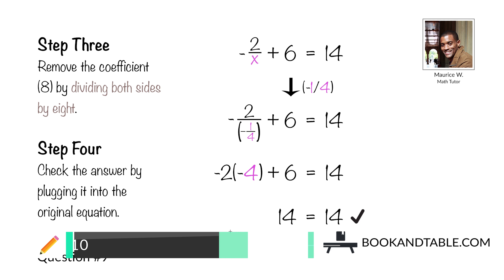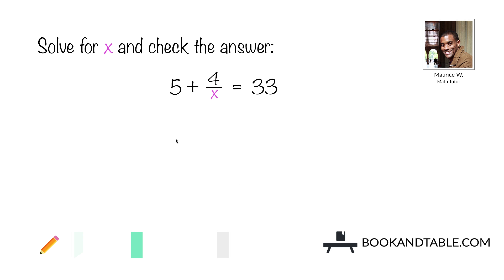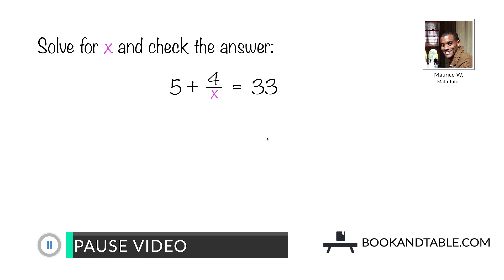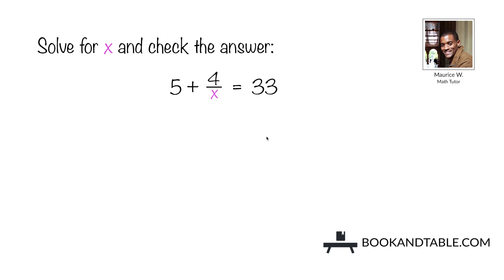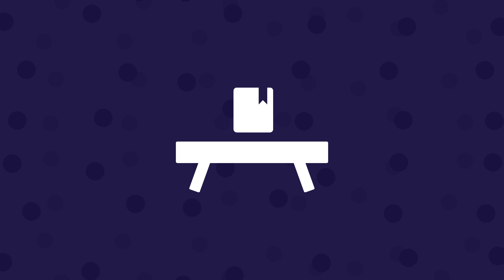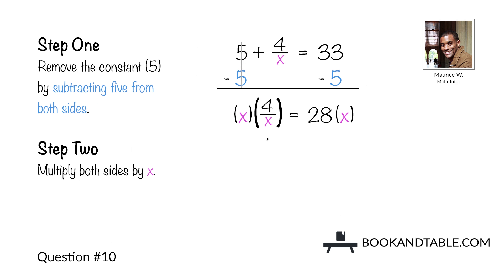Question number ten: solve for x and check the answer. 5 plus 4 divided by x is equal to 33. Step one: remove the constant positive 5 by subtracting 5 from both sides. That leaves you with 4 divided by x on the left side, and 33 minus 5, which is 28, on the right side.